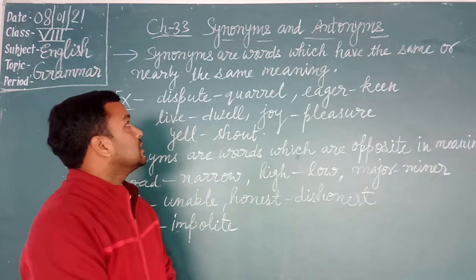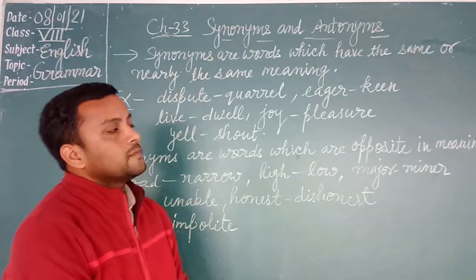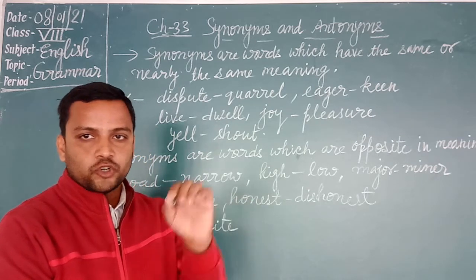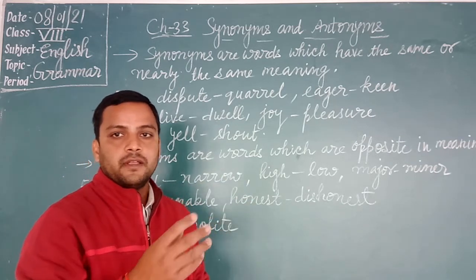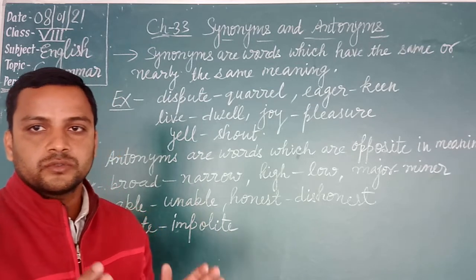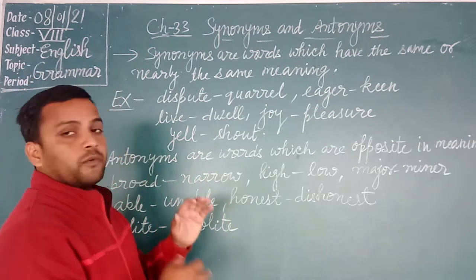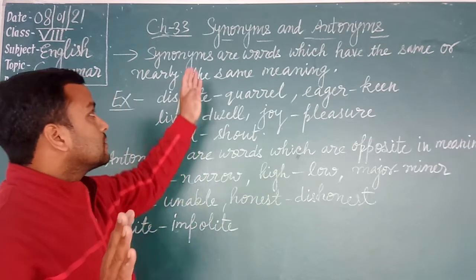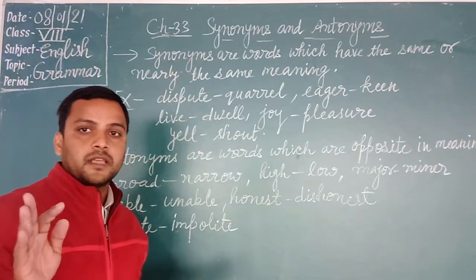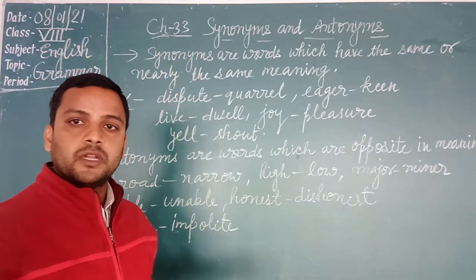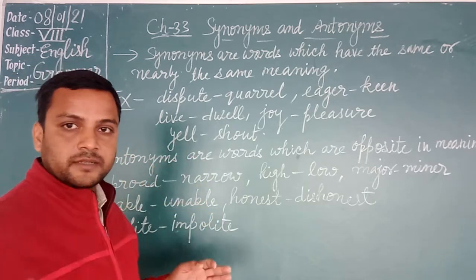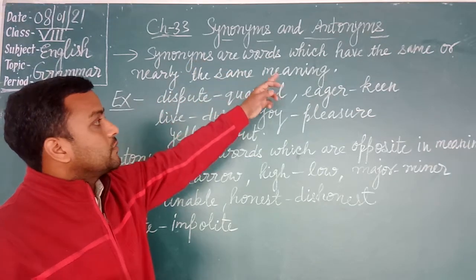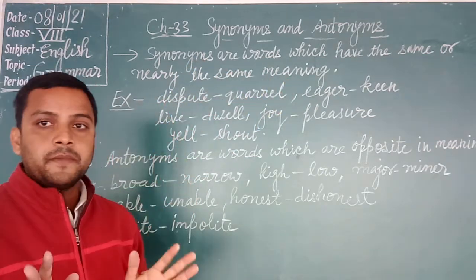Now see chapter number 33: synonyms and antonyms. These are very easy chapter topics. I am teaching you three to four chapters in a day, and for these chapters you only have to learn the lists. The lists of synonyms and antonyms are given in your book. What are synonyms? Synonyms are words which have the same or similar meaning.